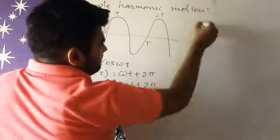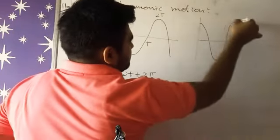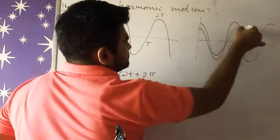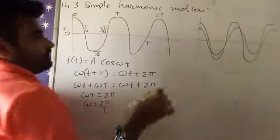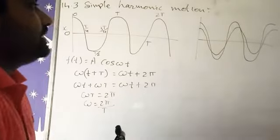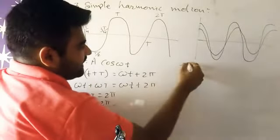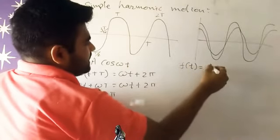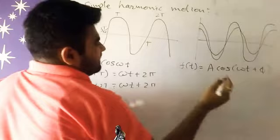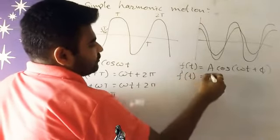Now here I am drawing another graph, and now we are having two graphs. See here two graphs are there, displacements are same. If I am going to write f(t) = A cos(ωt + φ), and another graph f'(t) = B cos(ωt + φ).